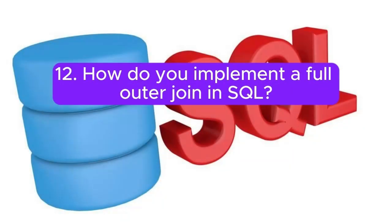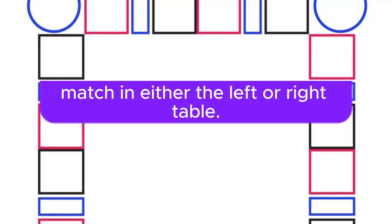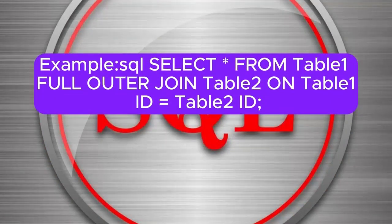Question 12: How do you implement a full outer join in SQL? Answer: Use full outer join to retrieve all rows when there is a match in either the left or right table. Example: SELECT from table 1 full outer join table 2 on table 1.ID equals table 2.ID.